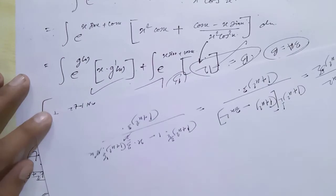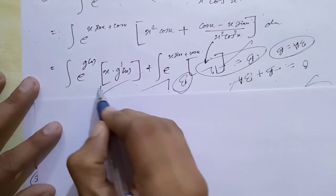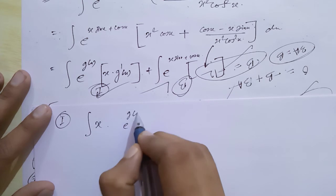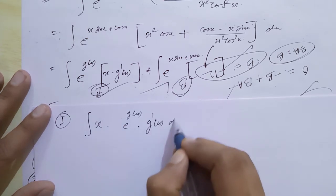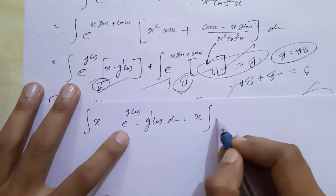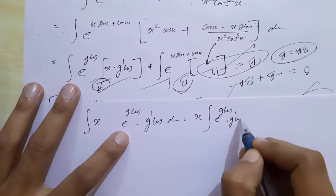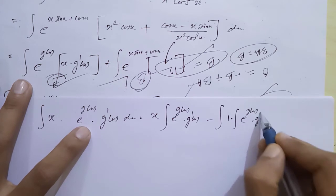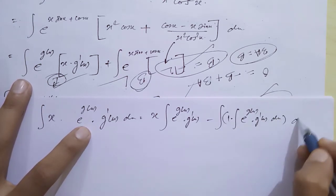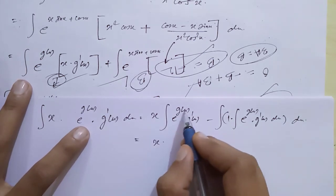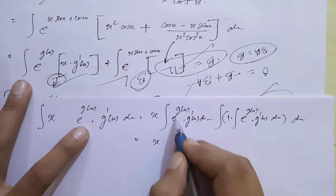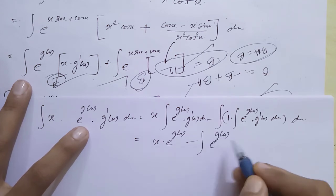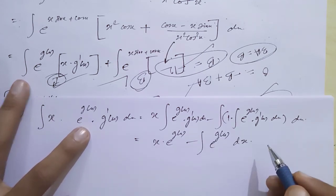For integral 1: integral of x · e^(g(x)) · g'(x) dx. Applying integration by parts with u = x: x · e^(g(x)) minus integral of e^(g(x)) dx, using substitution g(x) = t, g'(x)dx = dt so integral of e^t dt = e^t = e^(g(x)). Result: x · e^(g(x)) − integral of e^(g(x)) dx.